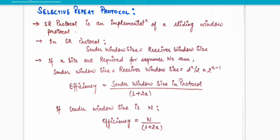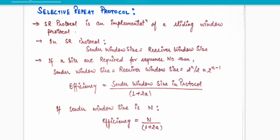What are the important points related to the selective repeat protocol? The basic point is that it is an implementation of the sliding window protocol. We use this for flow control and it belongs to the data link layer. So you can say the selective repeat protocol comes under the data link layer and flow control.